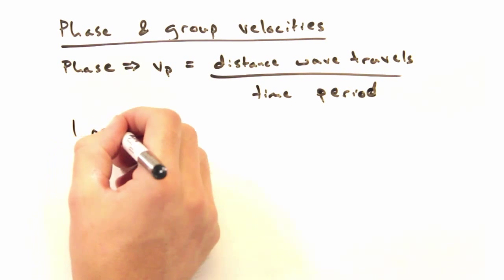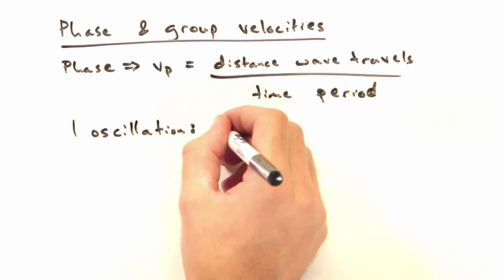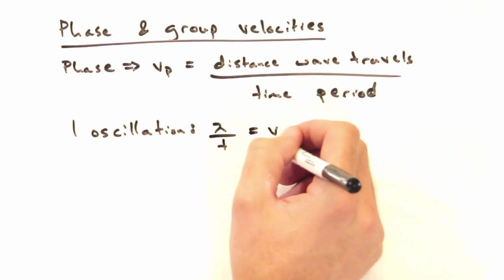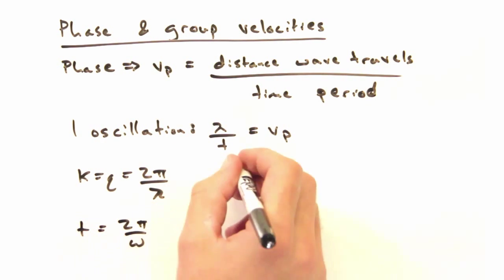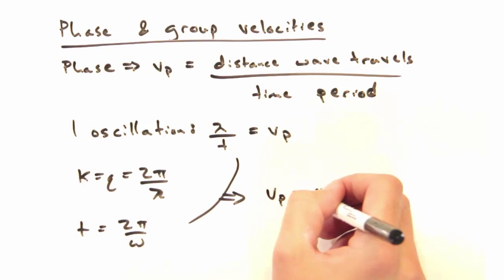To make things easier, we're just going to look at one oscillation. Okay, so the distance is just our wavelength, lambda, and our time would just be the period, t. So our phase velocity is lambda over t?